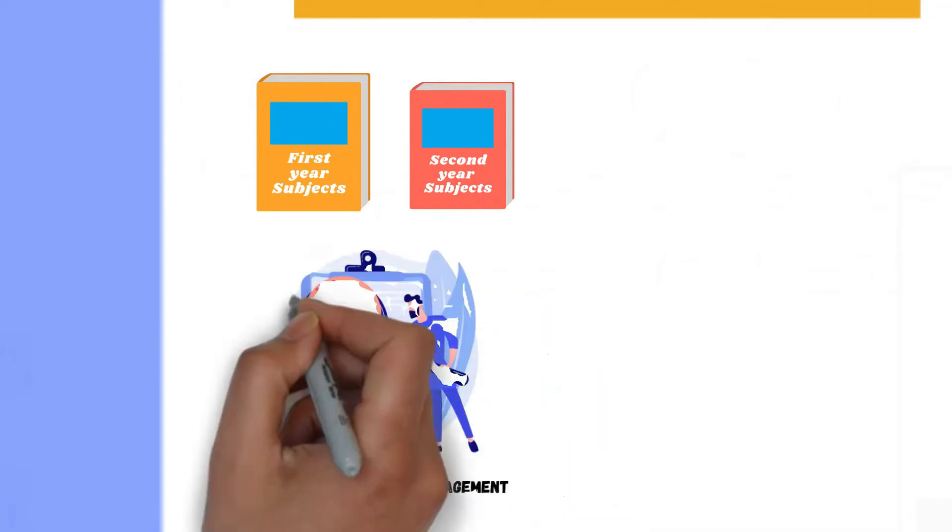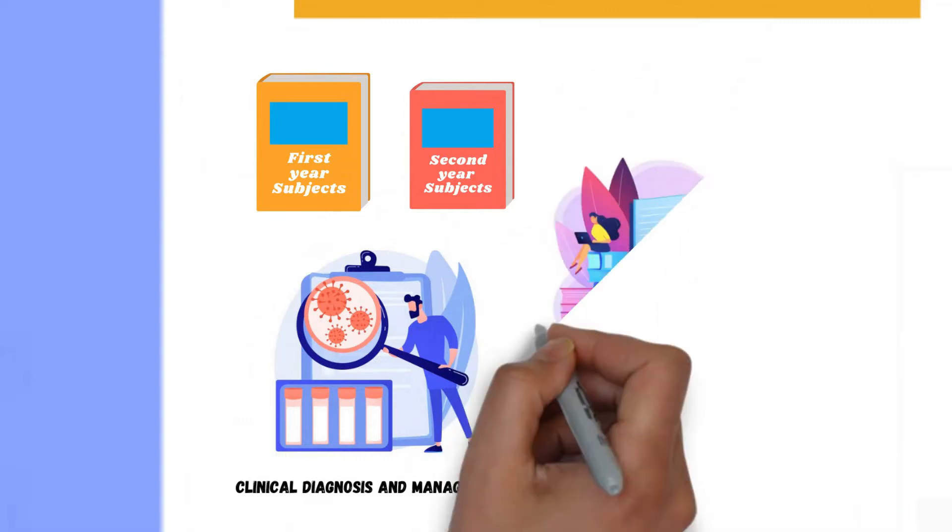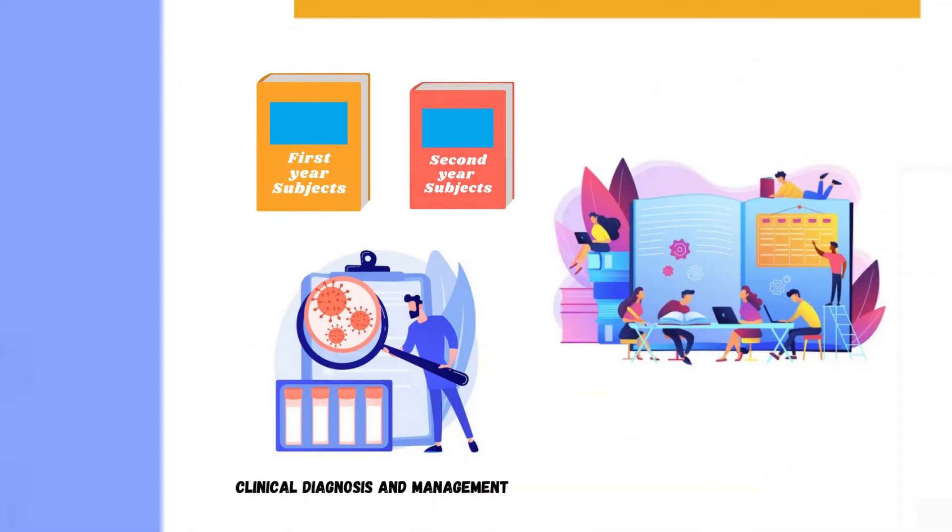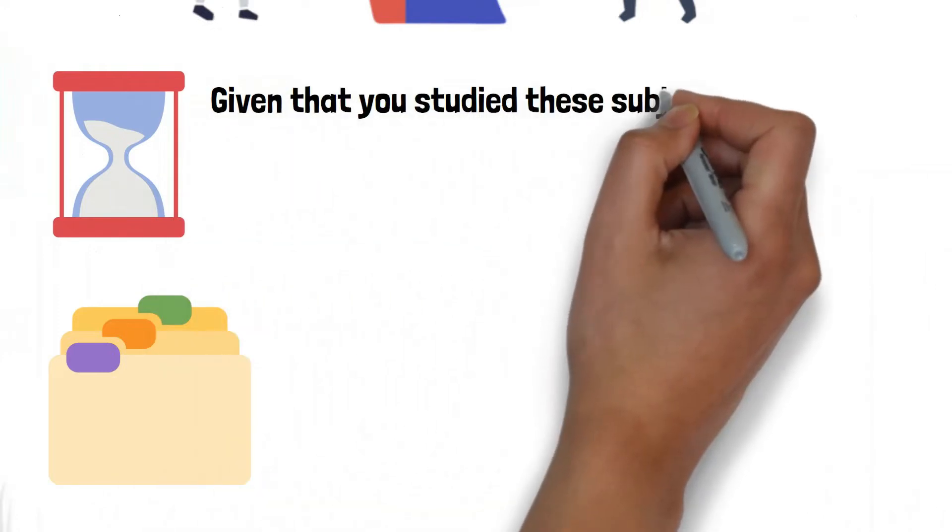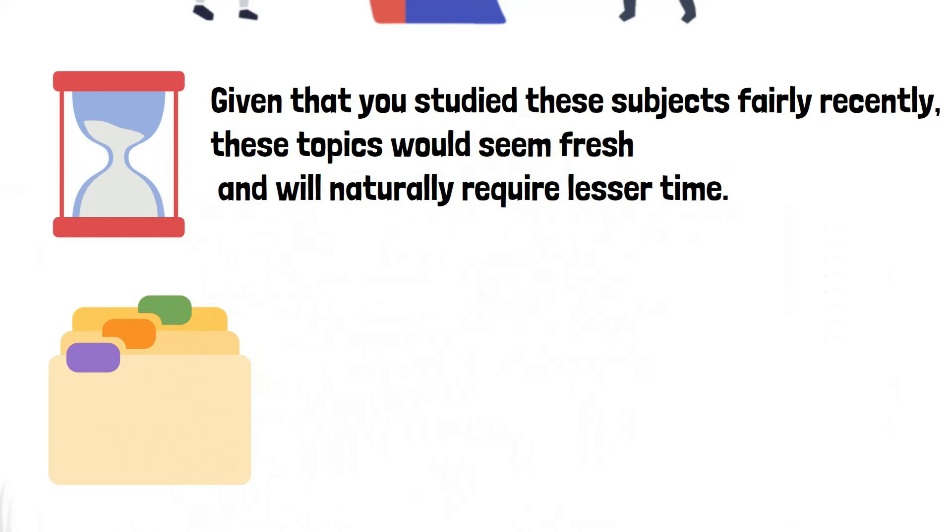A strategy that most toppers stand by is to first target the first and second year subjects. These topics will form the foundation of clinical diagnosis and management. So it's crucial that you revise through these concepts first. If you still have time, divide it among the final year subjects. Now given that you've studied these subjects fairly recently, these topics would seem fresh and will naturally require lesser time.